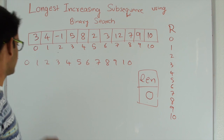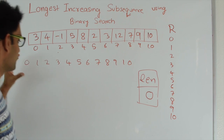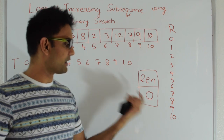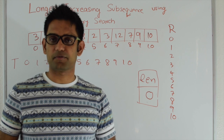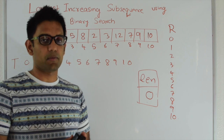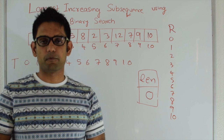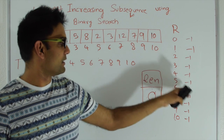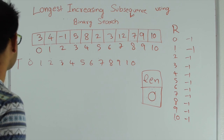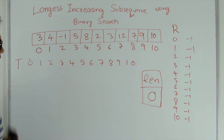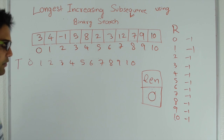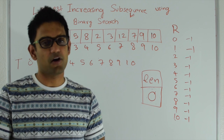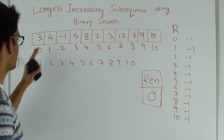I'll use two temporary arrays T and R. T is going to store the temporary intermediate results while R is going to store the final result. I also have a variable 'length' which tracks the length of the increasing subsequence found so far. This temporary table stores the minimum last value of an increasing subsequence of a particular length. Let's understand it with this example.